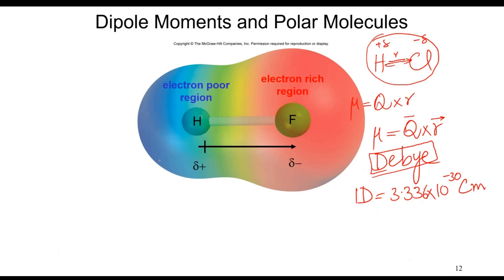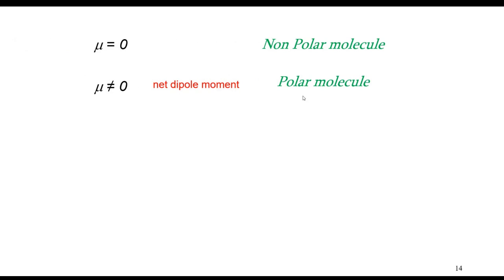You must remember two things: dipole moment is a vector quantity, and the direction of dipole moment is from positive charge to negative charge. Here, hydrogen is partial positive and fluorine is partial negative, so the direction is from positive to negative.